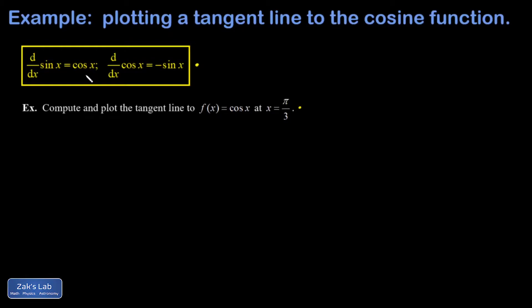So to get started here, we want to find the slope of the cosine function when x is equal to pi over 3. So we're going to get the derivative of this function, f prime of x. That's the derivative of the cosine function, and that gives me negative sine x. So to get my slope, in other words, the value of the derivative there, I'm going to evaluate negative sine pi over 3.